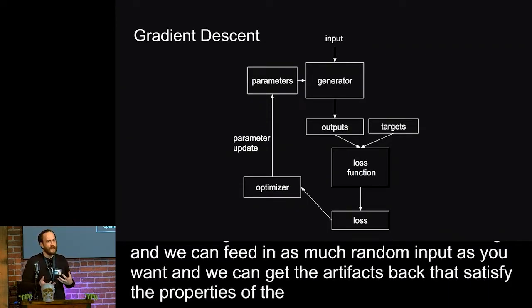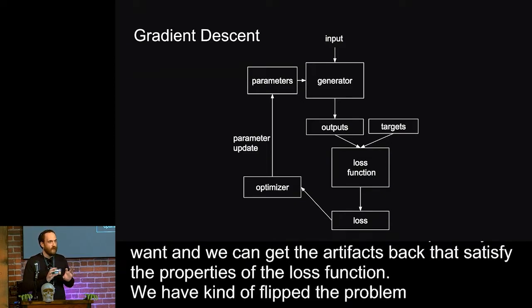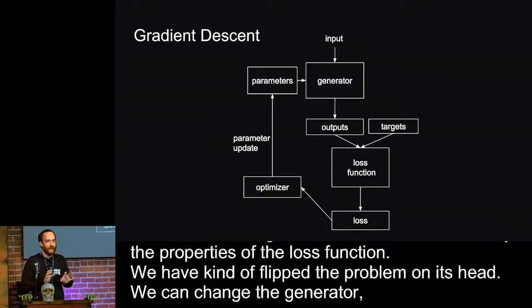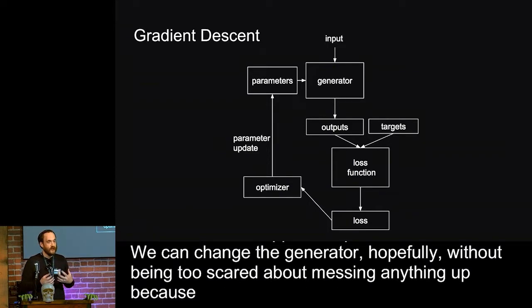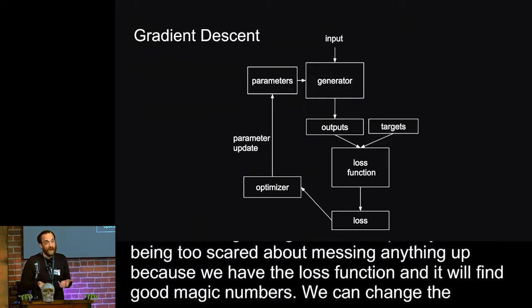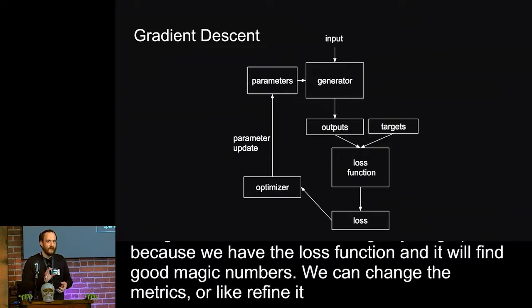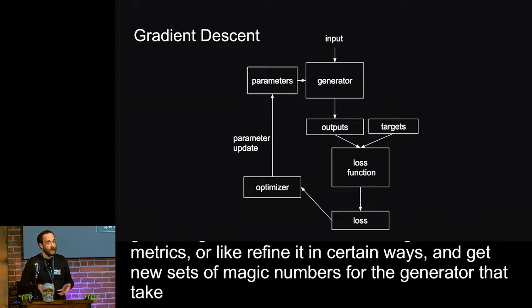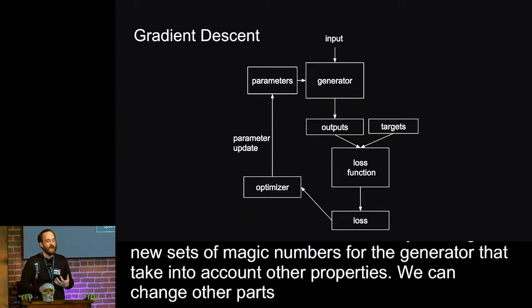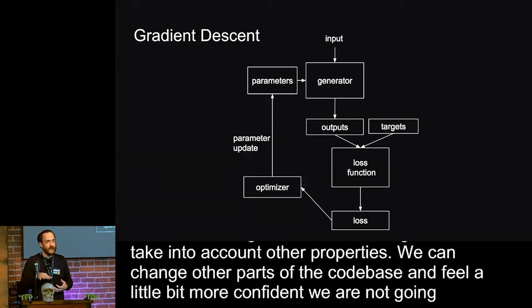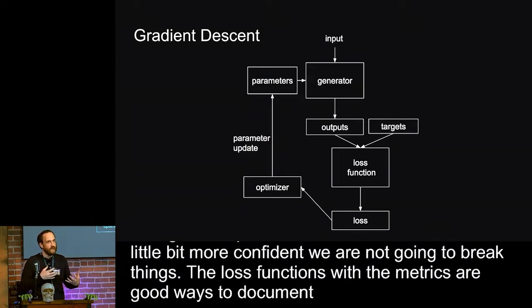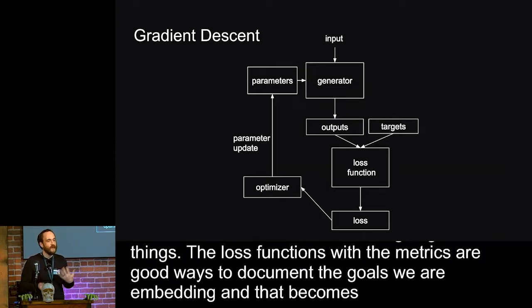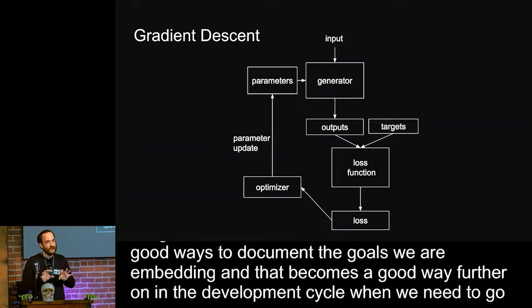So we've flipped the problem on its head. We can change the generator hopefully without being too scared about messing anything up, because we have that loss function that'll just find really good magic numbers for us. We can also change the loss function. We can change the metrics or refine it in certain ways and get new sets of magic numbers for the generator that take into account other properties. We can change other parts of the code base and feel a little bit more confident that we're not going to break things. The loss functions with those metrics inside of them are a really good way to document the goals that we're embedding. And that becomes a good way further on in the development cycle when we need to go back and figure out what our goals were because they're crystallized in the loss function.